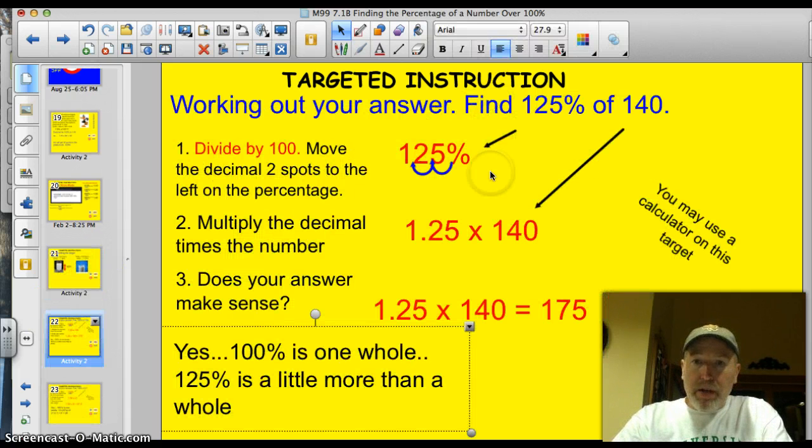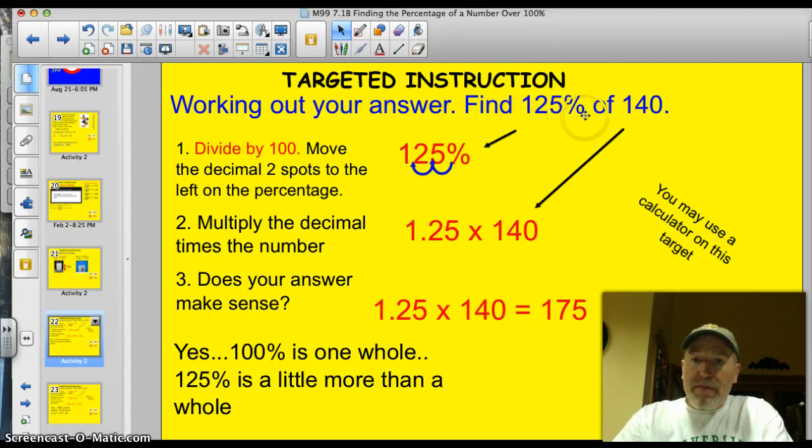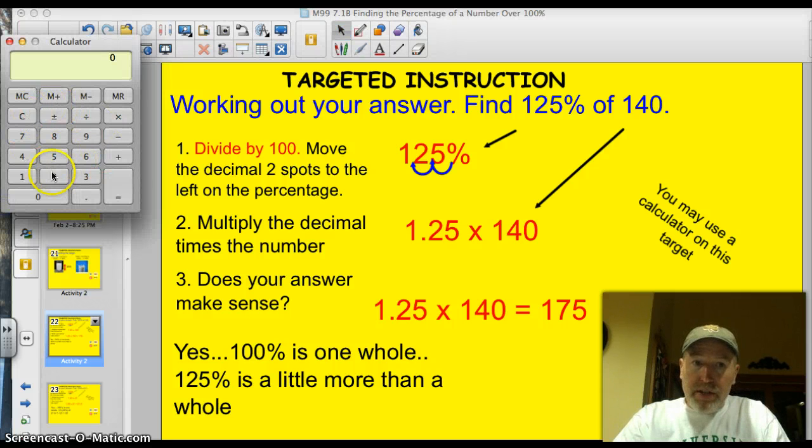Let's work through a problem together. We need to find 125% of 140. Well, here's my 125%. I'm going to divide by 100, move it two spaces to the left. I get 1.25 times 140. We multiply 1.25 times 140, and we're going to get 175. You pop it in the calculator the exact same way we did last night. 1.25 times 140 equals 175.